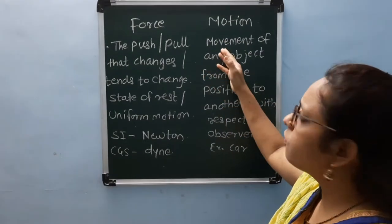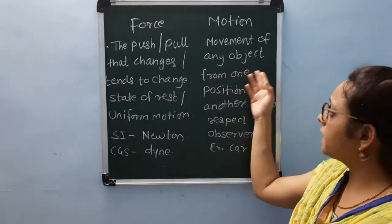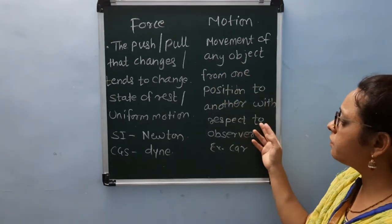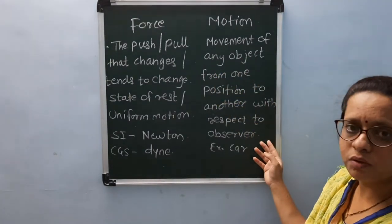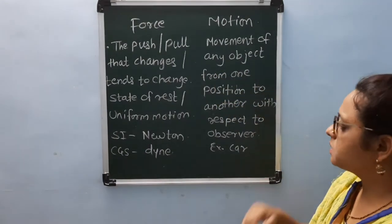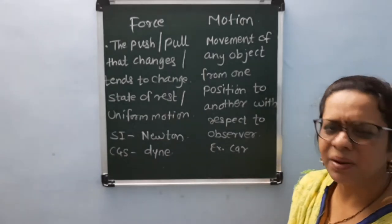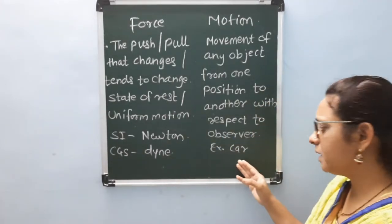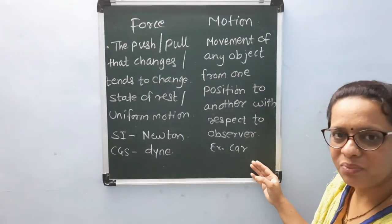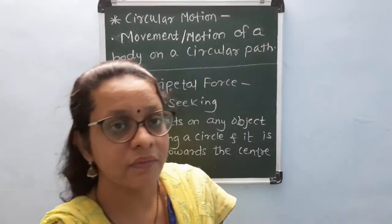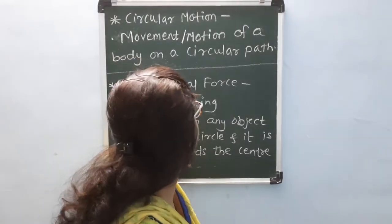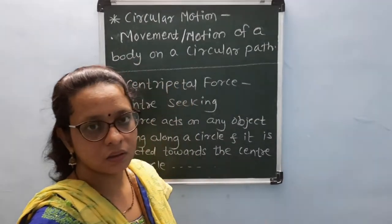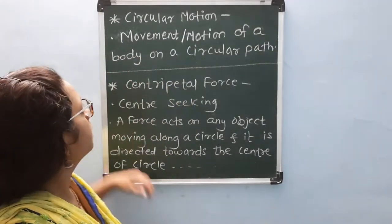What is motion? Movement of any object from one position to another position with respect to an observer is called motion. For example, any moving body, like a moving car. Now, let me see the new concept from this lesson.